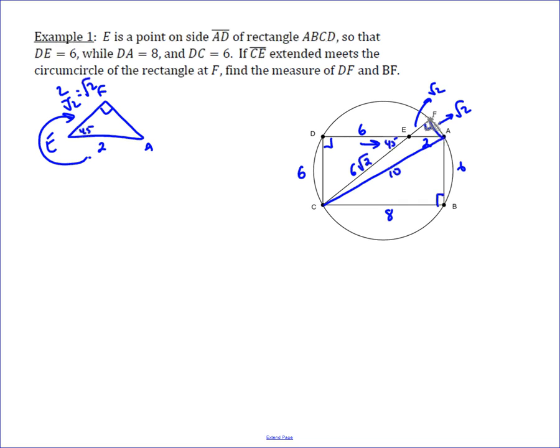Well, F is also on the circle. So if we combine it with three other points, we have another cyclic quadrilateral. And with one of those side lengths, our cyclic quadrilateral would be DF, FA, and AC, and DC. And our goal is to find DF, so let's just call it X for now.